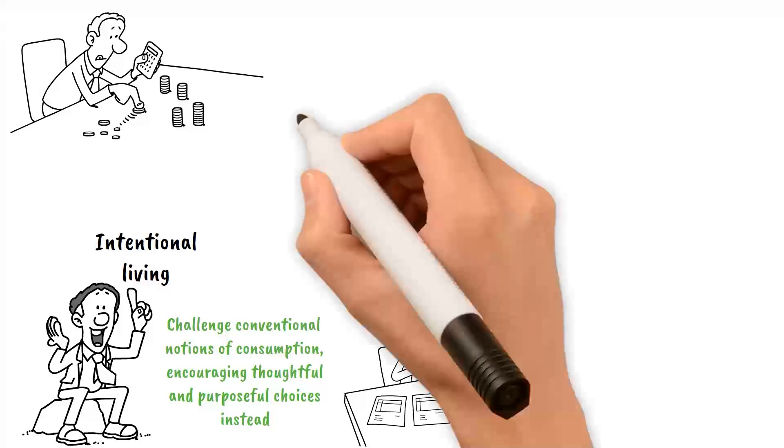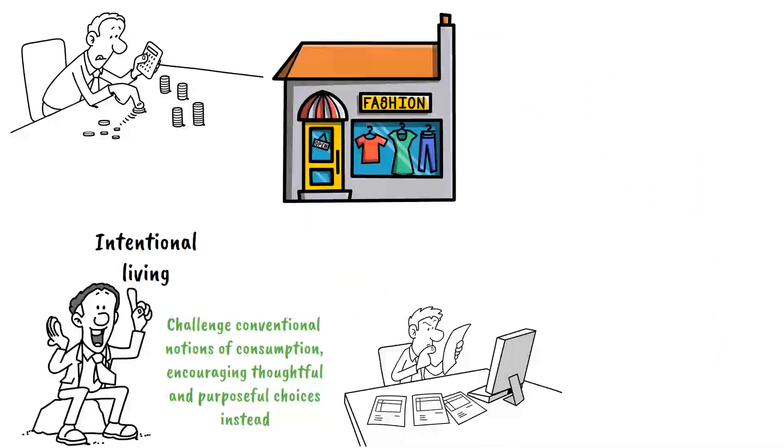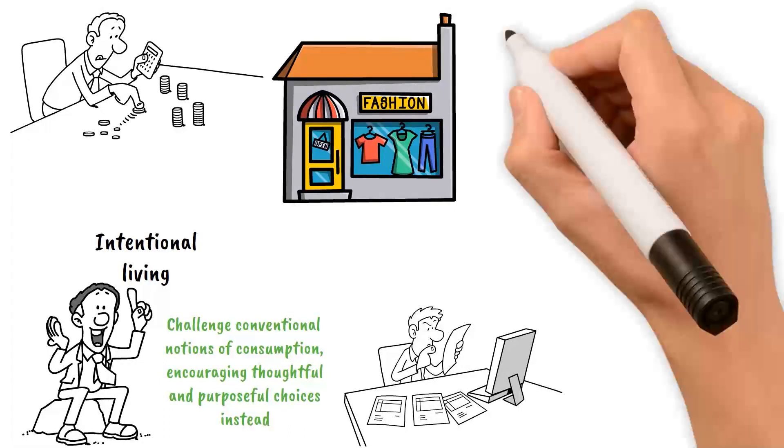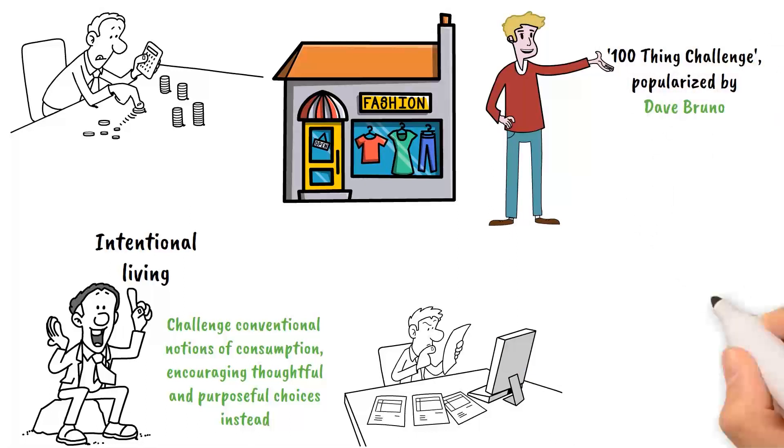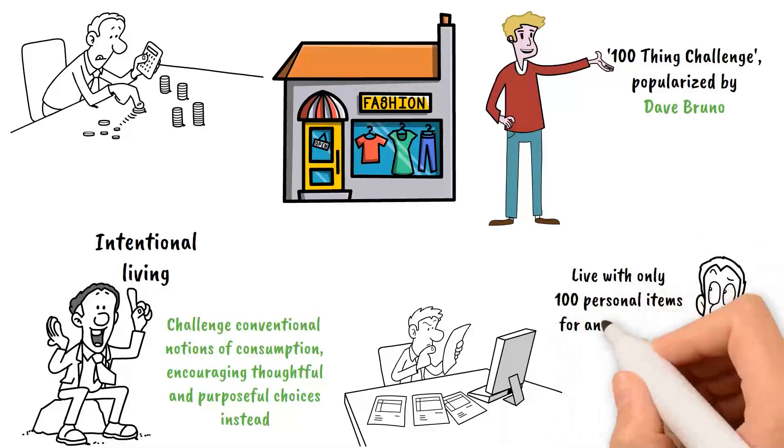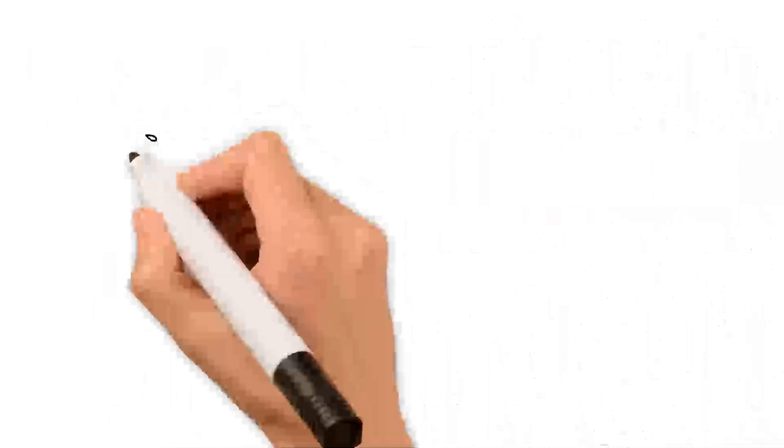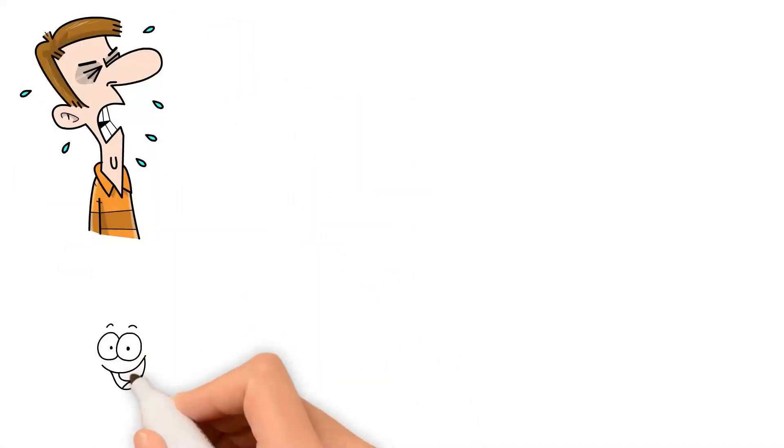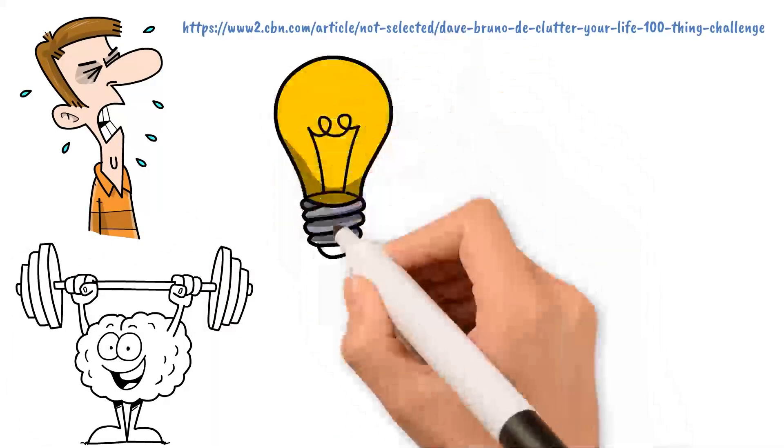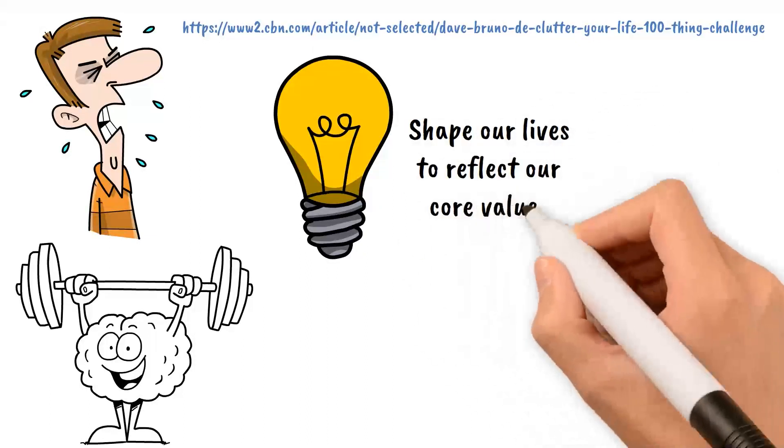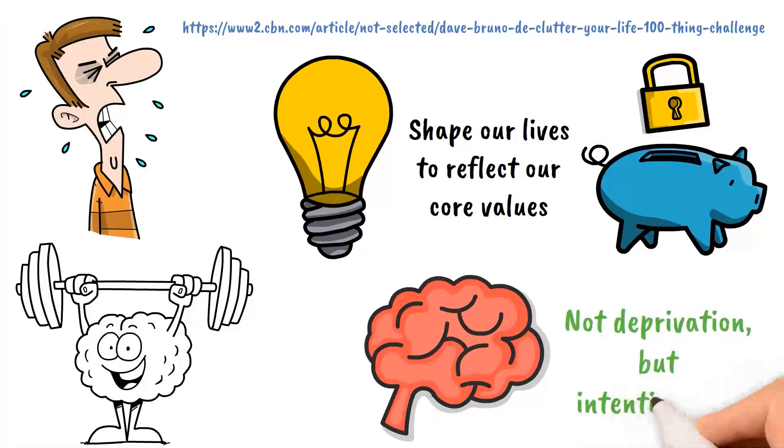For example, rather than purchasing fast fashion, which is frequently associated with poor labor standards and environmental impact, you may support sustainable organizations or invest in high-quality, long-lasting things. Another minimalist concept is the 100 Thing Challenge, popularized by Dave Bruno, which challenges individuals to live with only 100 personal items for an entire year. The purpose isn't to limit joy or comfort, but to challenge our relationship with possessions and consumer culture. By embracing and exploring minimalist ideas and concepts, we can shape our lives to reflect our core values, resulting in a more purposeful lifestyle and financial savings. Remember, the goal is not deprivation, but intentionality.